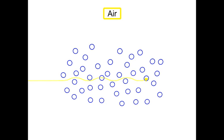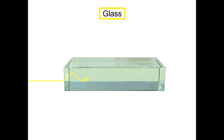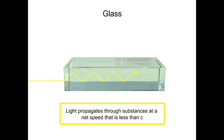When light encounters a medium such as air, water, or glass, it propagates through the substance at a net speed that is less than C.